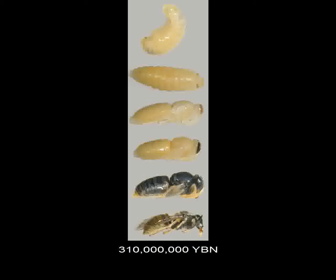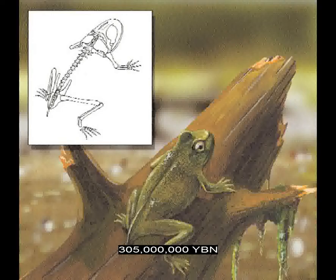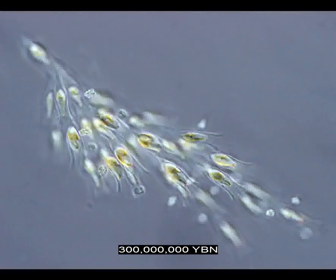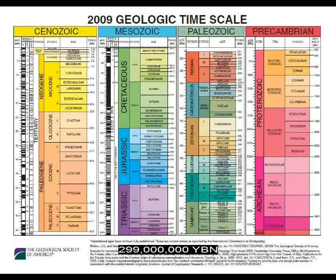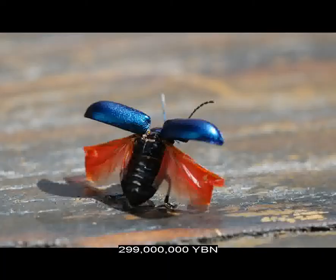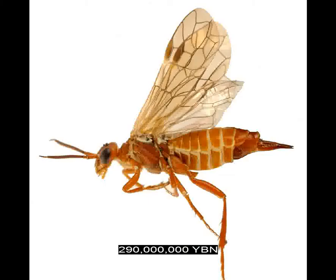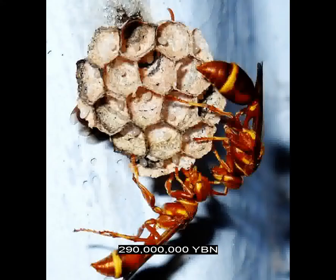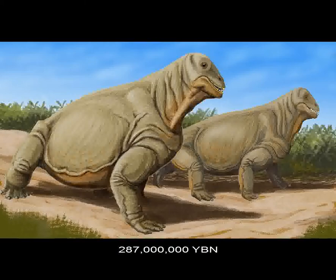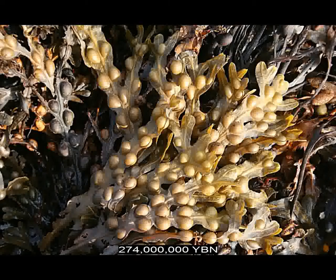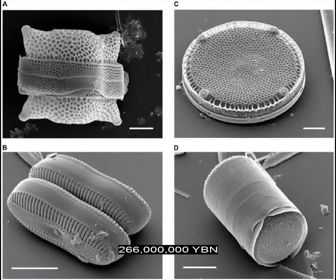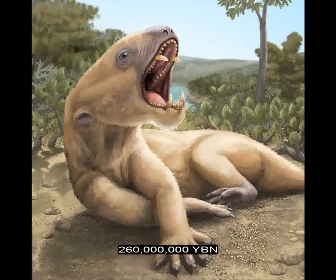The amphibians Anura evolve—ancestor of all frogs and toads. The straminopiles Chrysophyta evolve—golden algae. The end of the Carboniferous and start of the Permian period. The holometabola Coleoptera evolve—ancestor of the beetles. Gymnosperms ginkgos evolve. The holometabola Hymenoptera evolve—ancestor of all bees, ants, and wasps. The synapsid therapsids evolve—cynodonts. The straminopiles Phaeophyta evolve—ancestor of all brown algae, including many seaweeds like the giant kelps. Note that brown algae are not plants but are protists. The straminopiles diatoms evolve. The earliest endothermic, or warm-blooded, and hair-growing animal: a therapsid. Endothermic is the physiological maintenance of a constant body temperature independent of the external environmental temperature.